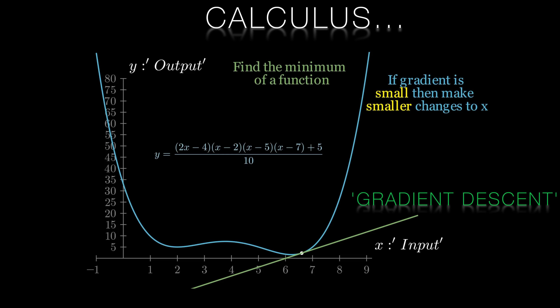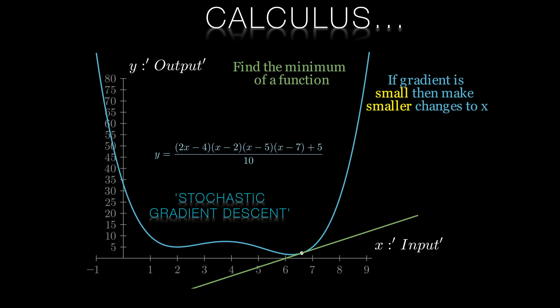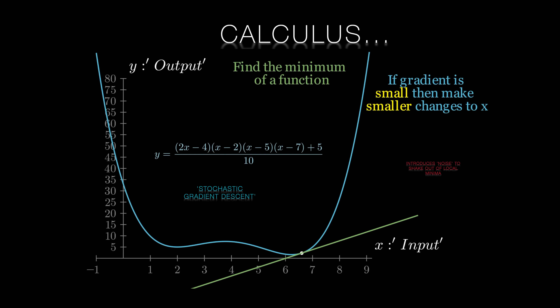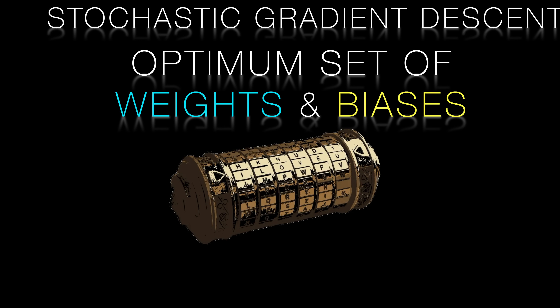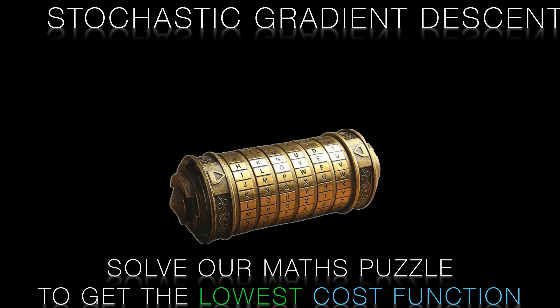One evident problem with gradient descent is that it can get stuck in local minima. One way of avoiding this is to use stochastic gradient descent, or SGD. Rather than computing the exact gradient using all of the training examples, we take a smaller sample of the training set. This gives us an estimate of the true gradient, but with enough noise and randomness to jolt it out of any local minima. SGD will help us choose the optimum set of weights and biases for our network to get our cost function as low as we can.